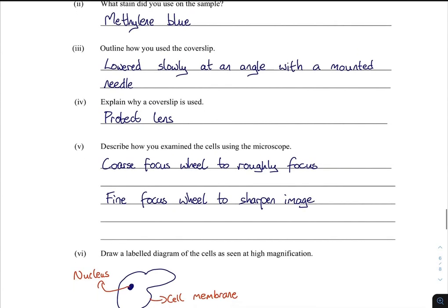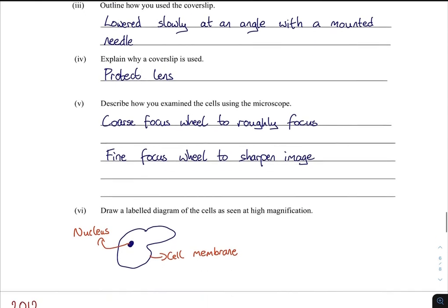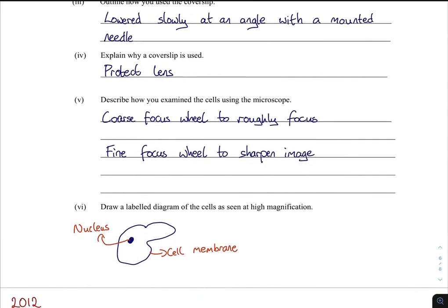Describe how you examine the cells using the microscope: use the coarse focus wheel to roughly focus, then the fine focus wheel to sharpen the image. This is what the animal cell will look like — you'll see the cell membrane and the nucleus. You will not see the mitochondria, ribosomes, or vacuole, so do not label them.